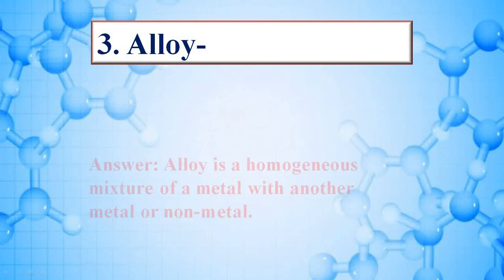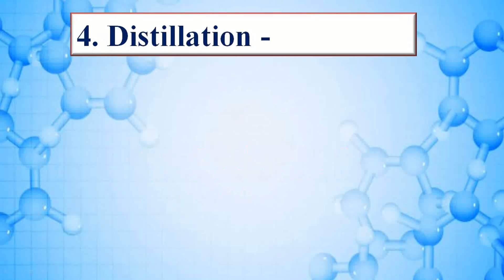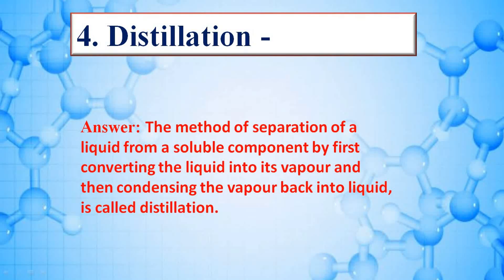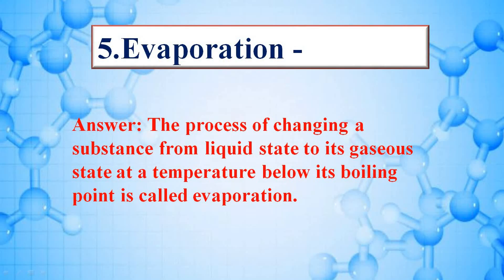Alloy: an alloy is a homogeneous mixture of a metal with another metal or non-metal. Distillation: the method of separating a liquid from a soluble component by first converting the liquid into its vapor and then condensing the vapor back into liquid is called distillation.